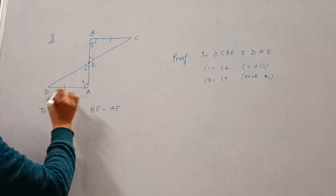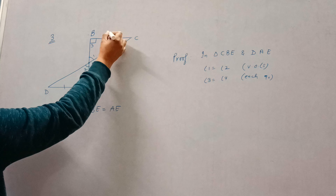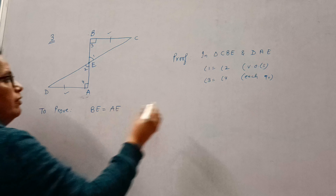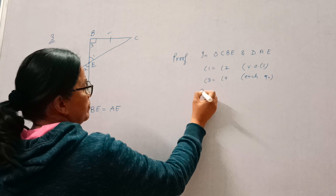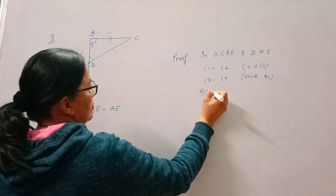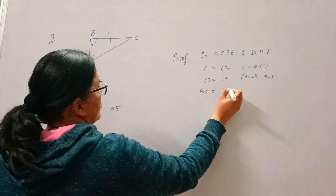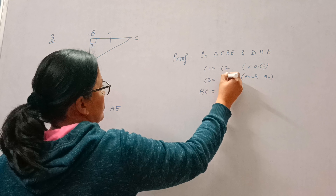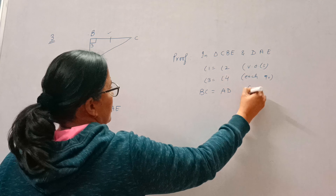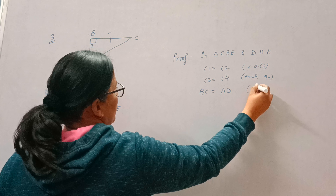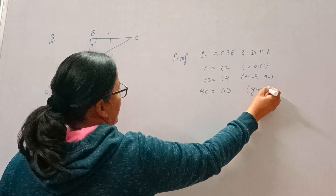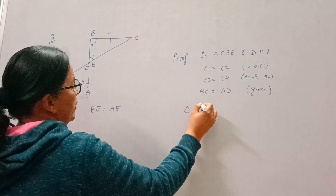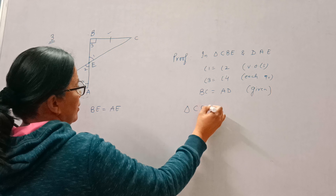Angle 3 is equal to angle 4, each being 90 degrees — so angles 3 and 4 are both 90 degrees. Also, BC is equal to AD, which is given to us.